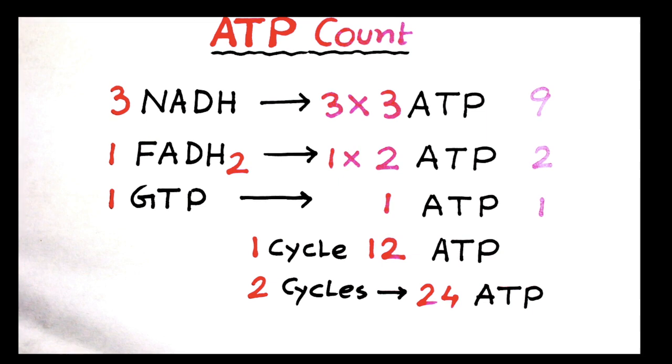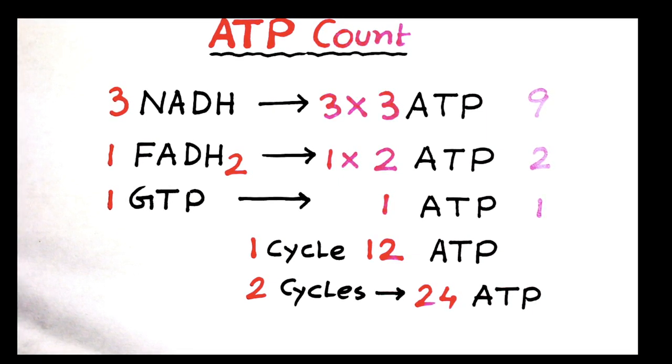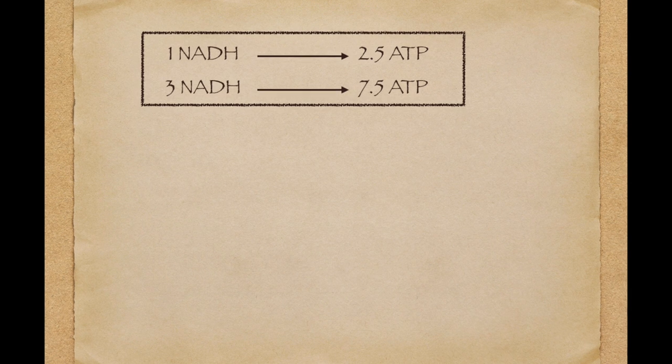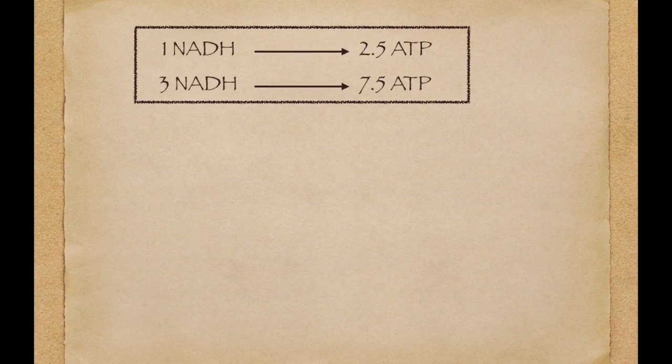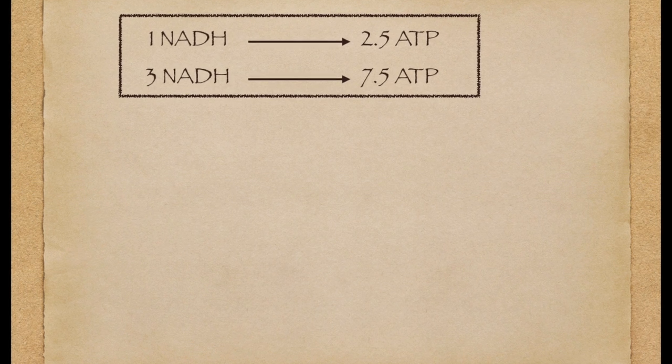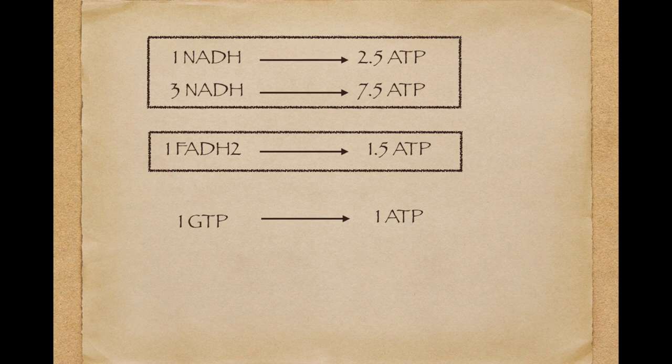But wait, this is an old concept. Actually, the new concept is one NADH produces 2.5 ATP, so three NADH will produce 7.5 ATP. And one FADH2 produces 1.5 ATP.